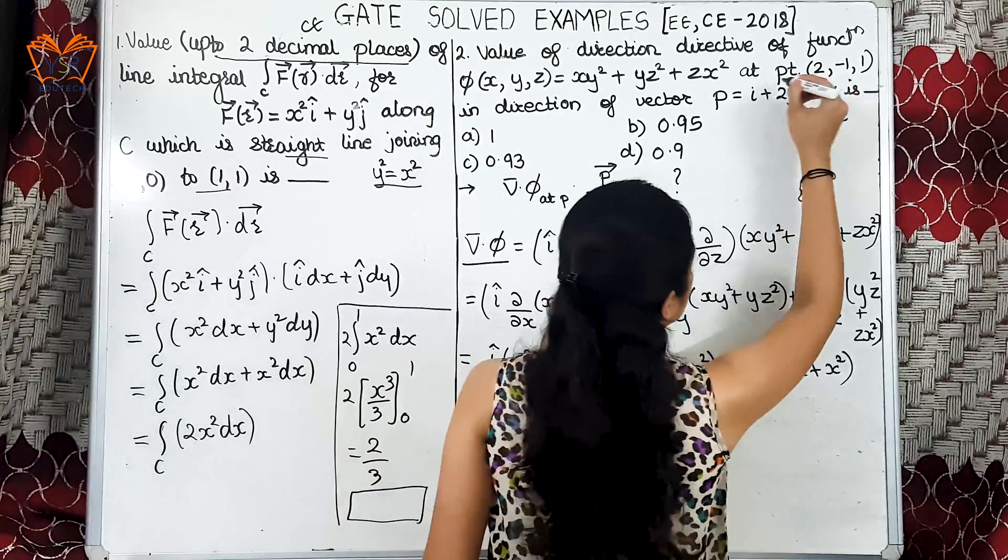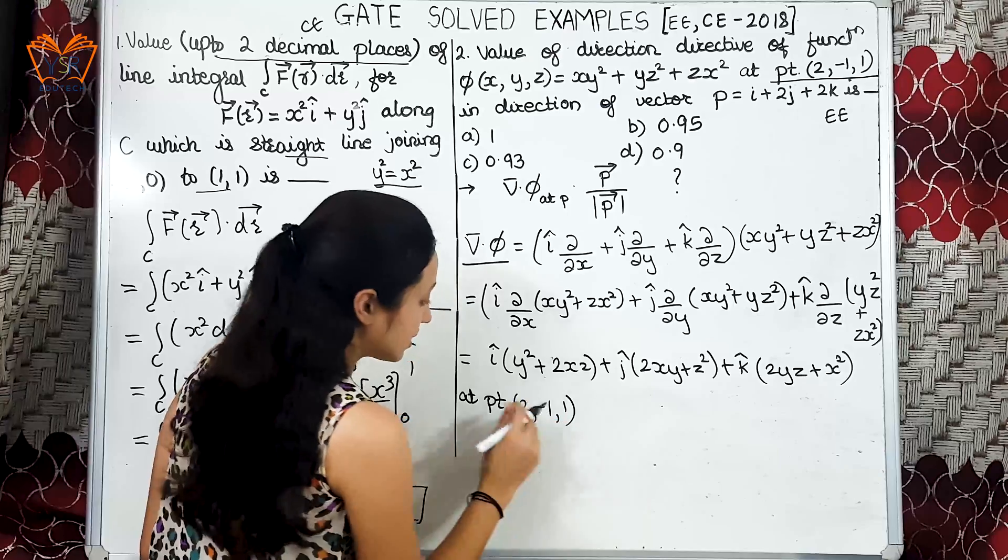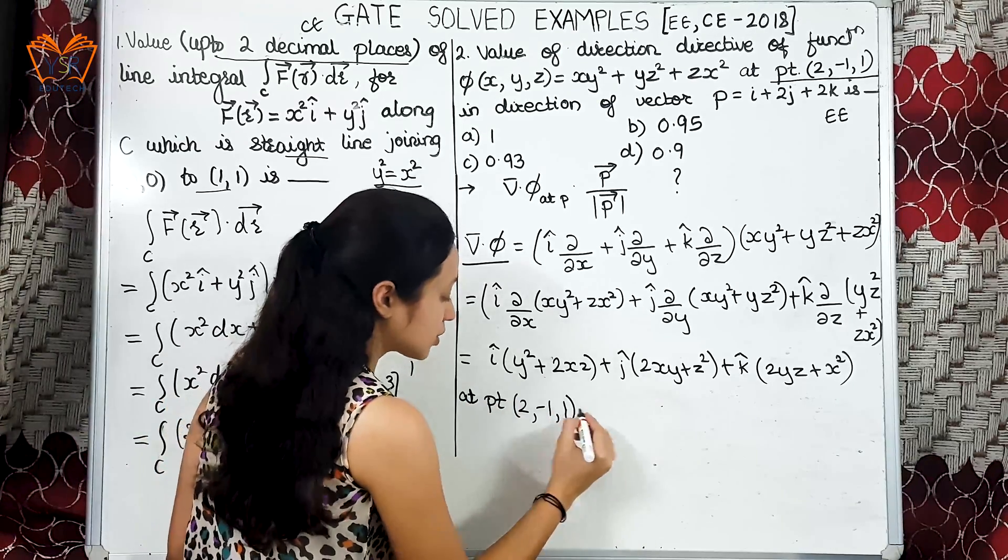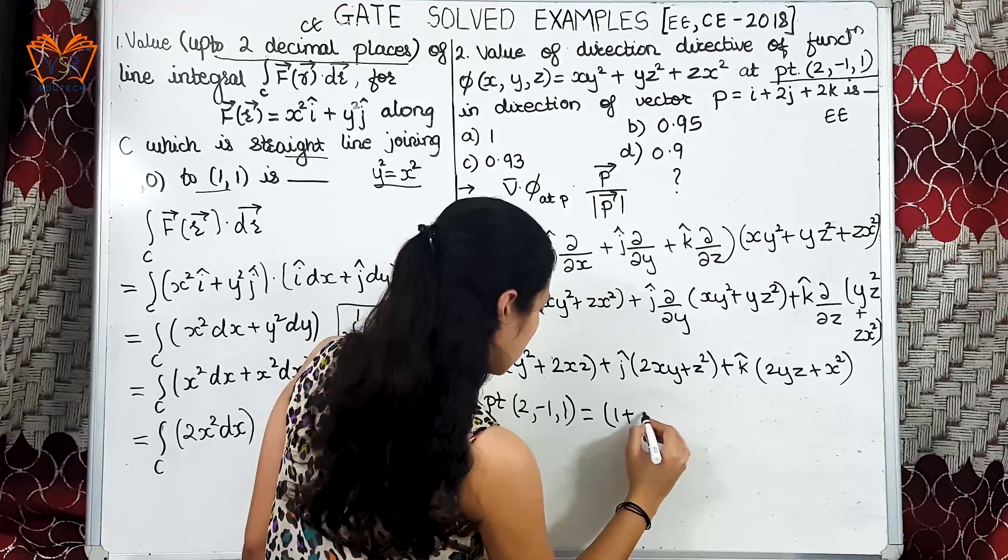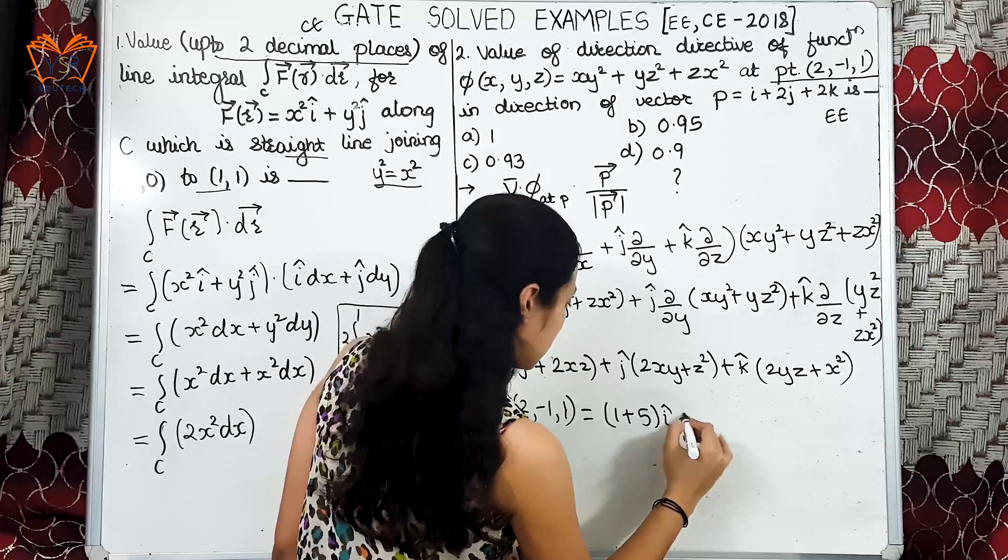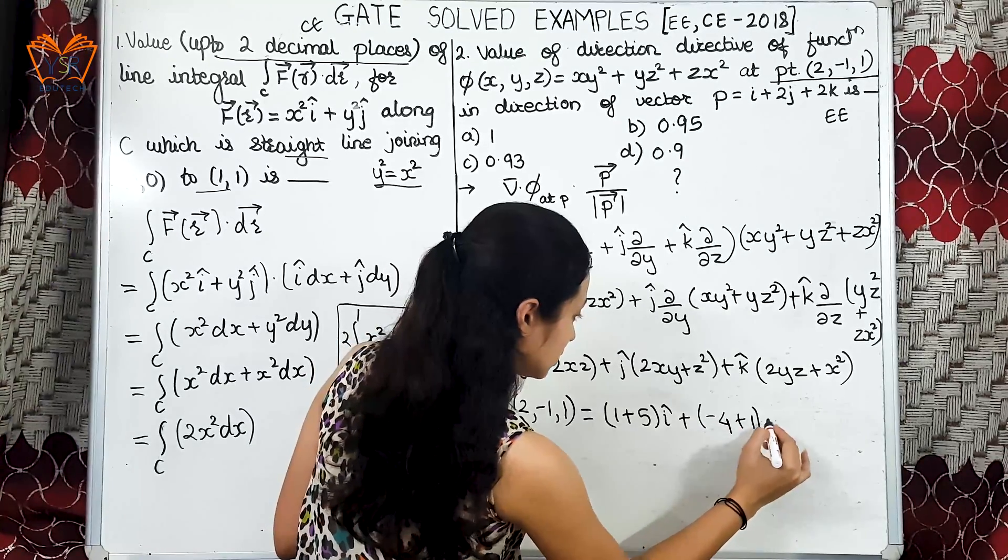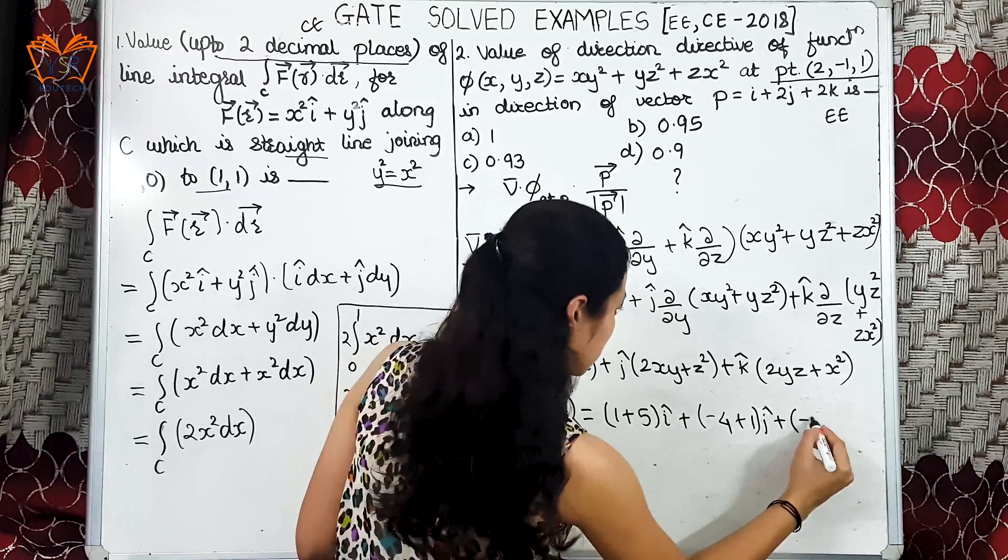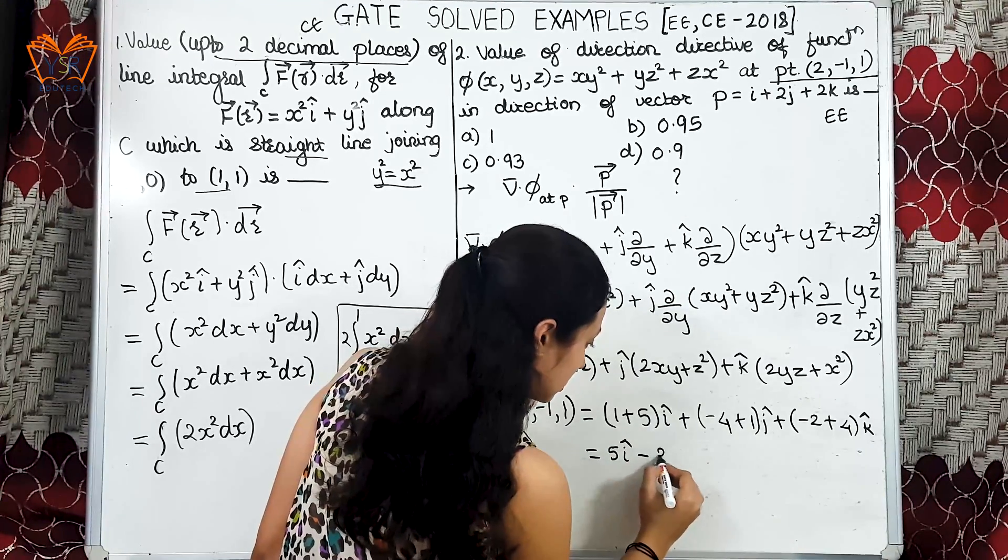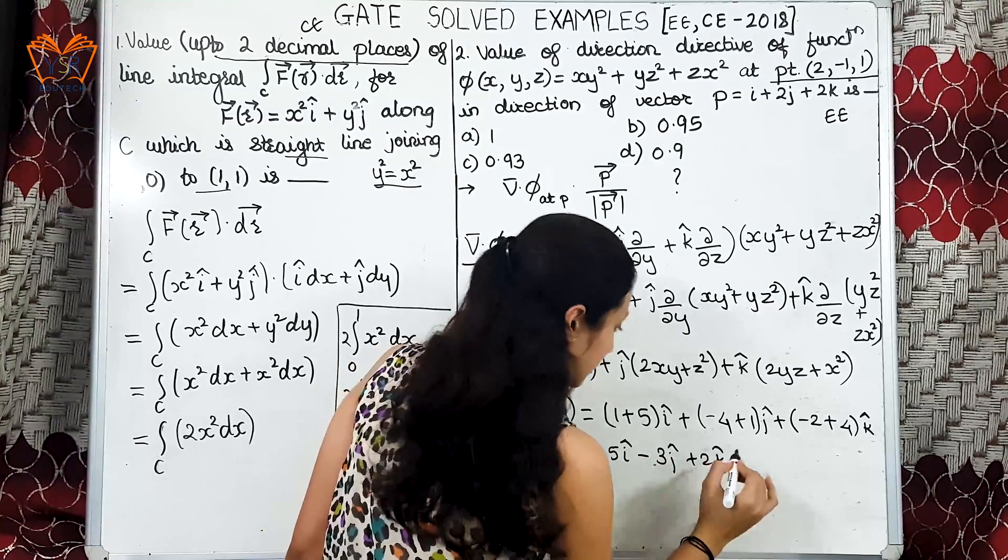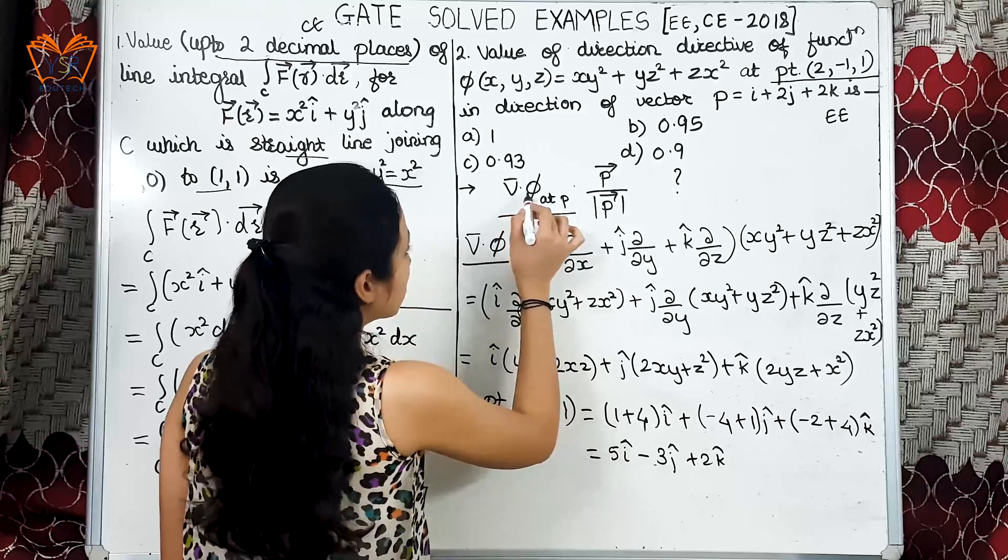Now the point given to us is at point (2, -1, 1), that is x will be 2, y is -1, and z is 1. Let us substitute these values here. We get 1 plus 4, i cap plus -4 plus 1, j cap plus -2 plus 4, k cap. And we get 5 i cap minus 3 j cap plus 2 k cap. So we have found out the value for del dot phi at the given point.